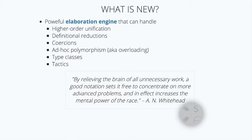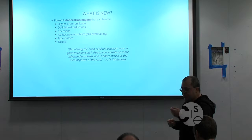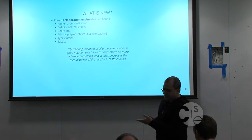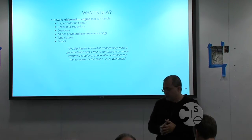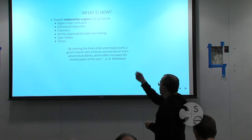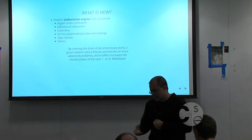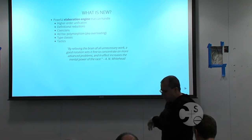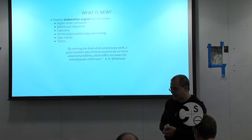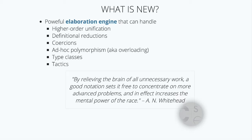What is new about Lean? We have a powerful elaboration engine. In any proof assistant, what you write is a far cry from the fully elaborated term — there are many details you don't type, that the system has to infer by itself. This process of inferring the missing parts is called elaboration. It includes higher-order unification, definitional reductions, coercions, ad hoc polymorphism (overloading), type classes, and tactics. We also want to synthesize obvious steps automatically. This is what we mean by elaboration engine.